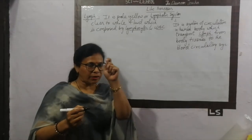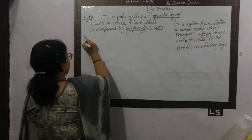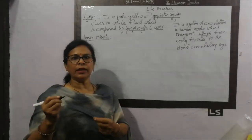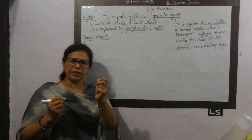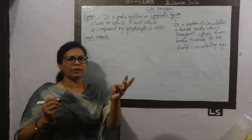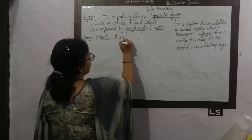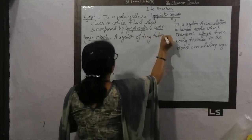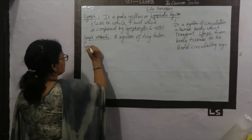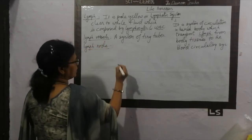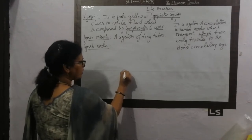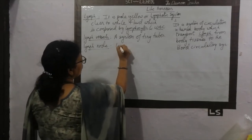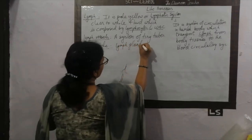The terms used in the lymphatic system: the first component is lymph, the second is the lymph vessel. Just as blood vessels exist, lymph vessels are also needed. The lymph vessel is a system of tiny tubes, the same as blood vessels. The third component is lymph nodes — these are glandular structures along the lymph vessels. These glands are called nodes, and they are also known as lymph glands.